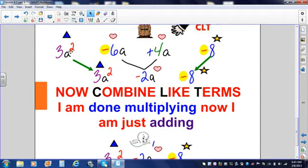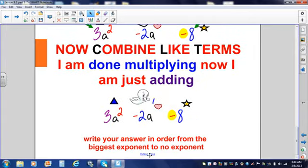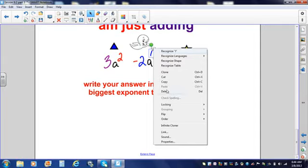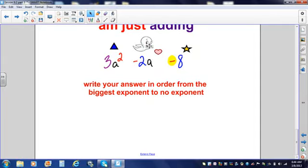I do not have another term that is squared to the second power. I do not have another constant or number constantly alone. So, I bring down the 3A squared. I bring down the negative 8. Now that I'm done combining my terms, I make sure that my answer is written in order from the biggest exponent to no exponent. So, I have 3A squared first, minus 2A. Remember, there's our ghost. There's an invisible exponent of 1. They will not write it on the EOC. So, you just need to know that the ghost is still there. Minus 8.